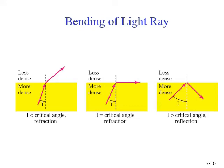You need to note that the critical angle is a property of a substance, and its value differs from one substance to another. So this value of the critical angle changes when there is a different denser or lighter medium involved.